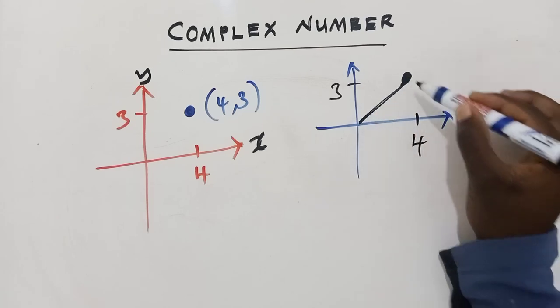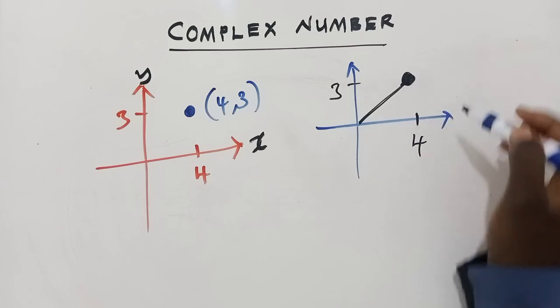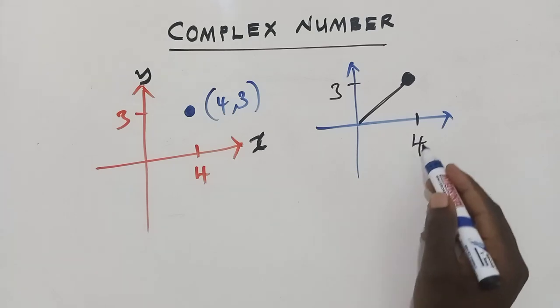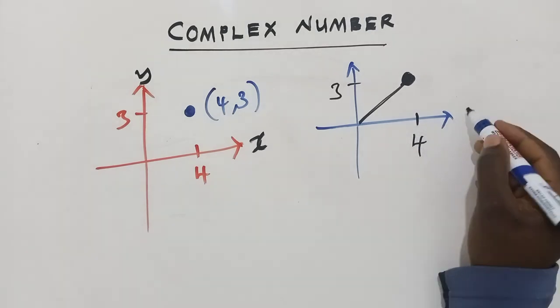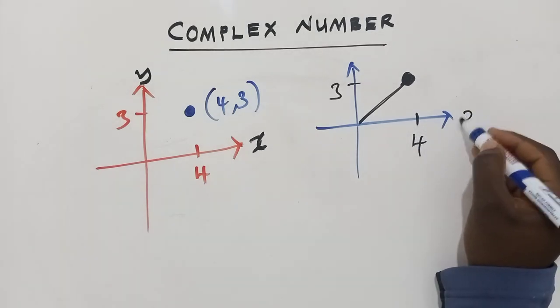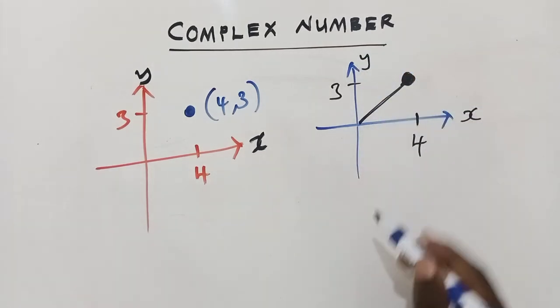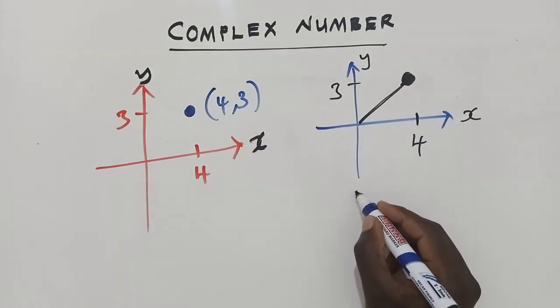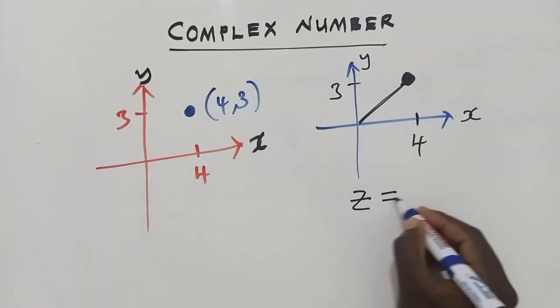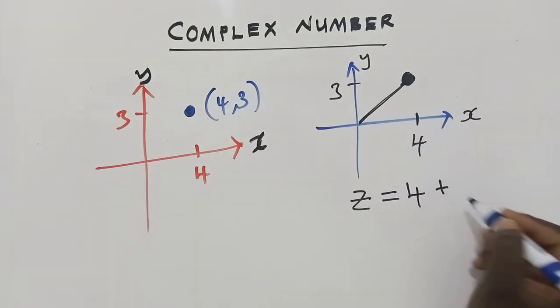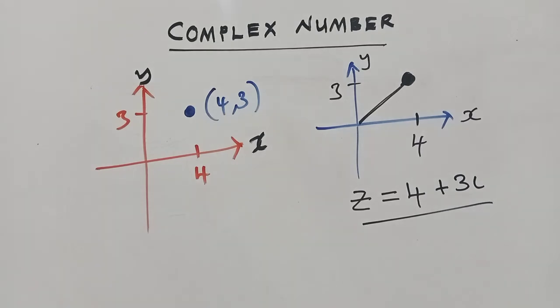Of which when writing, you start with your real part, which is the x-axis, and the imaginary part, which is the y-axis. So here we are going to say Z equals 4, this 4, plus 3i. So we have put it in a complex form. This is how it works.